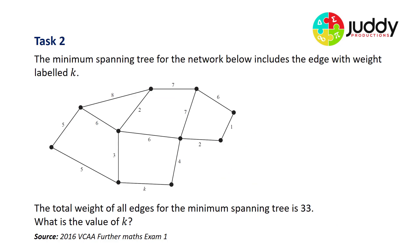Task number two, the minimum spanning tree for the network below includes the edge with a weight labeled K. So here's our edge with a K weighting. The total weight of all edges for the minimum spanning tree is 33. What is the value of K? This question is a little bit different. So we have to use Prim's algorithm to determine the minimum spanning tree. And from that, we can calculate the edge weight of K.